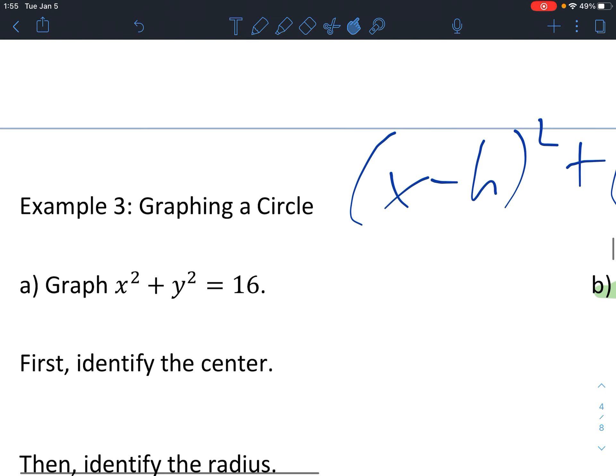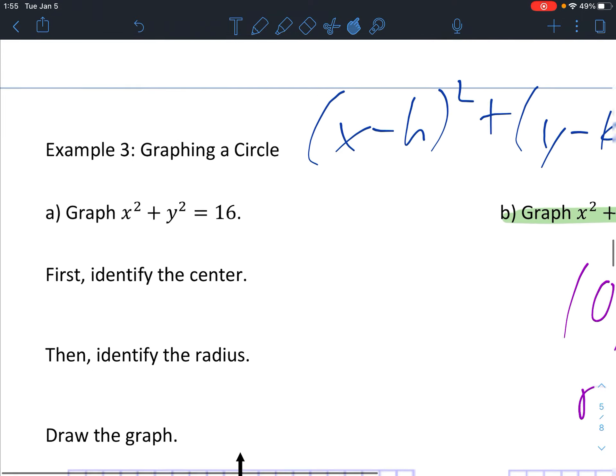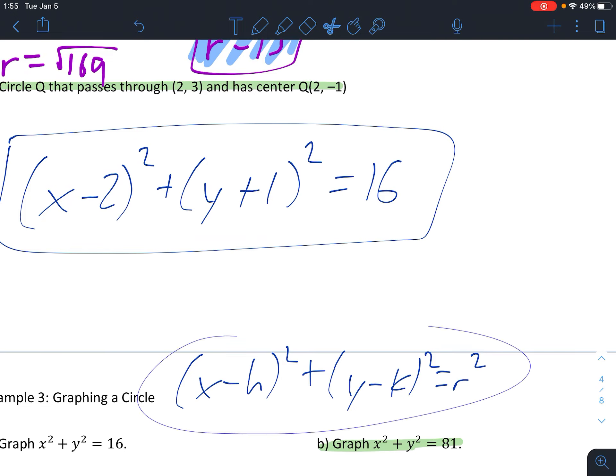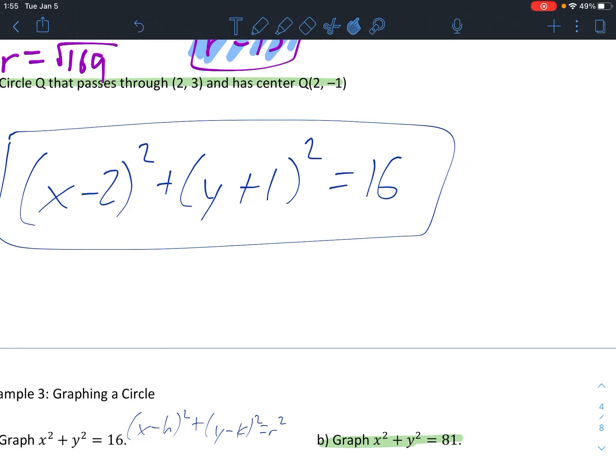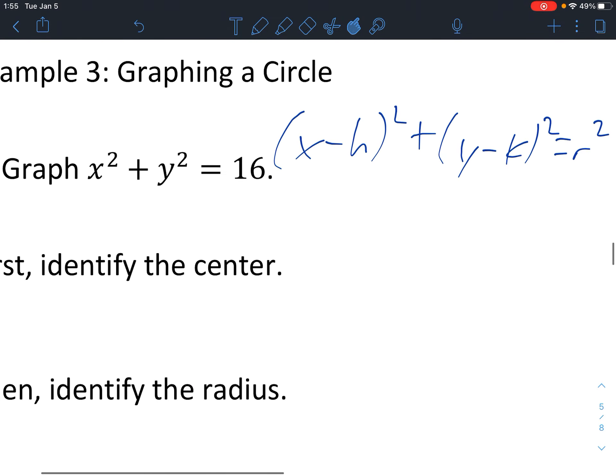Example 3. Now we're going to graph a circle in the coordinate plane. So what we're going to do is you're going to identify the center, you're going to identify the radius and then draw a graph. So this one, it looks a little tricky, but it's actually easier than normal. In order to get x squared, h would have to be 0. In order to get y squared, k would have to be 0. So my center is 0, 0. For the radius, I know that r squared equals 16. So r must be 4. The radius is never negative, so always positive.